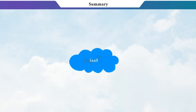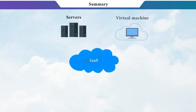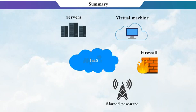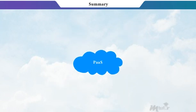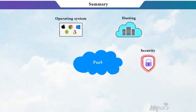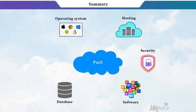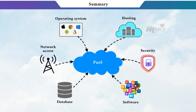Infrastructure as a Service provides servers, virtual machines, firewall, shared resources, data center, and storage to the user. Platform as a Service typically includes an operating system, hosting, security, software, database backups, network access, and so on.